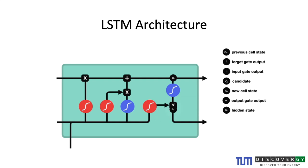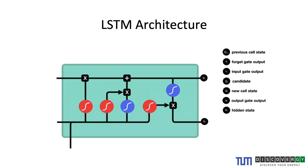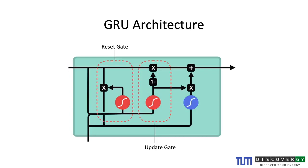The second gate is the input gate, which specifies how much of the current input needs to be included. The blue circles represent tanh activation functions, used to regulate the flow within the cell. The third gate is the output gate, which determines the hidden state and cell state to be passed on to the next cell. It is a complicated structure with many parameters to optimize.